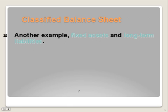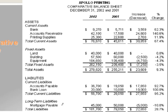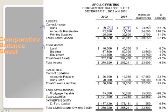Another comparison on the classified balance sheet is fixed assets to long-term liabilities, because both have a time period greater than one year. A comparison of these totals provides insight into the financing of fixed assets — for example, where do we get the building and land from? Probably the mortgage. Looking at this as a comparative balance sheet comparing 2001 to 2002: in 2001 we had $5,711 in cash, and in 2002 it went up to $9,000 — an increase of about $3,000, which is a percent change of 62%, calculated as the change divided by year 1's value.